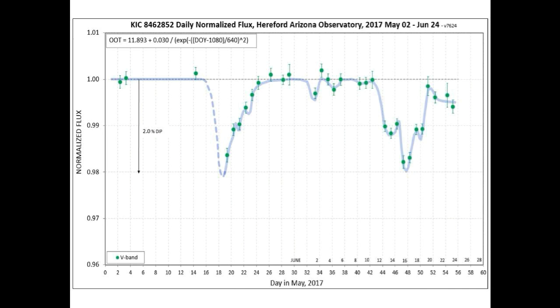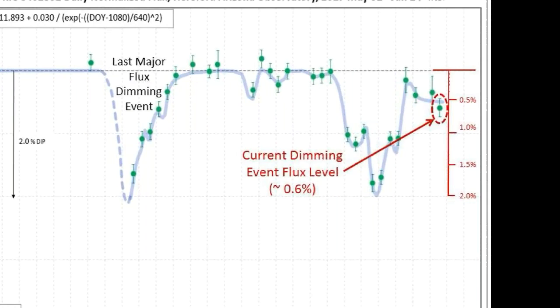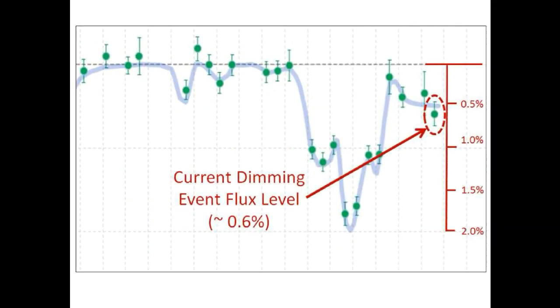So this is the current normalized flux graph of Tabby's Star. We have circled the very latest measurement in red. We have fallen slightly to approximately 0.6% below nominal flux levels. So we are still definitely in this dimming event. What happens from here is really anyone's guess.